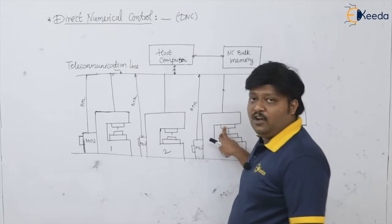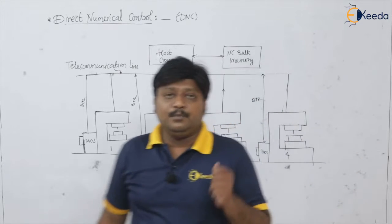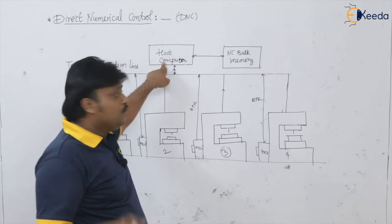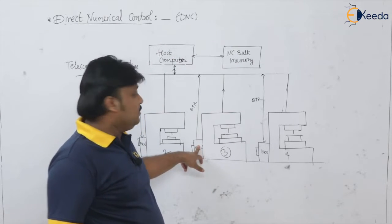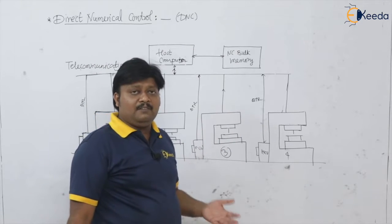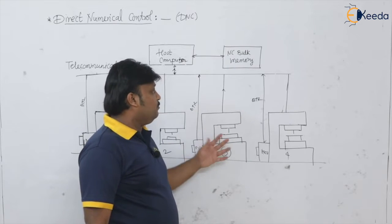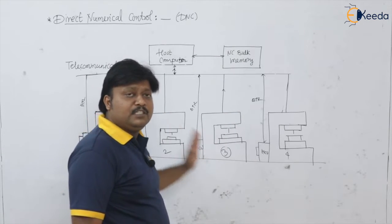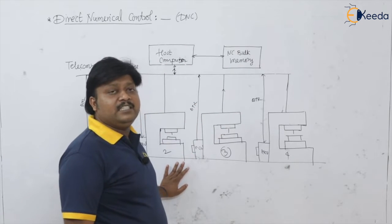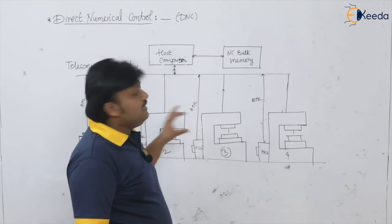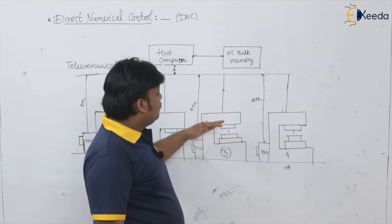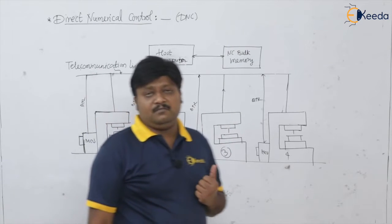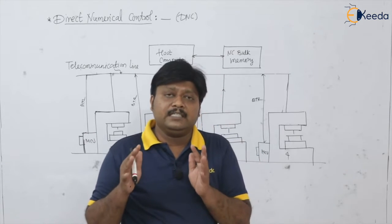The person sitting in front of the host computer sees that signal and responds. He eliminates the existing program in the machine control unit and downloads the next required program — whatever the next decided operation is — into machine number three, then gives the start command again. This whole process of receiving the signal, downloading the next program, and giving the command takes about 20 to 30 minutes.